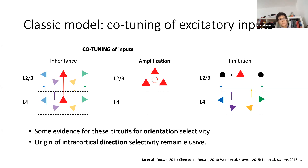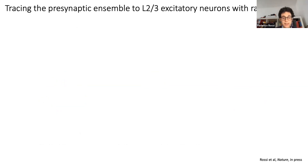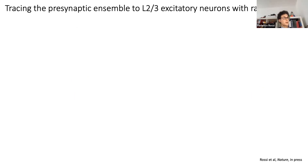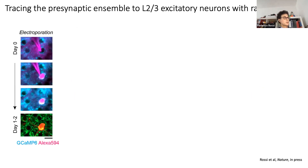To resolve this matter, I developed a pipeline to trace and record from the presynaptic inputs to individual layer 2/3 neurons. This pipeline is based on monosynaptic rabies tracing and improves the success rate over previous protocols. The first step is a single cell electroporation of an individual neuron in layer 2/3 of the mouse visual cortex.